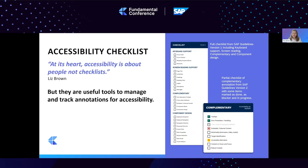At its heart, accessibility is about people and not checklists — and although I agree with Liz Brown, whom I heard during an accessibility training, checklists are useful to manage and track annotations for accessibility. At the same time, designers want tools and processes to deliver accessible designs. In large organizations, there are so many requirements to consider from the WCAG guidelines that we need processes to understand the scope of each requirement relative to the tasks we're doing.